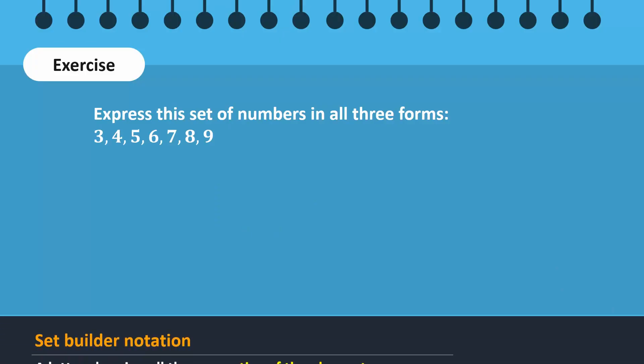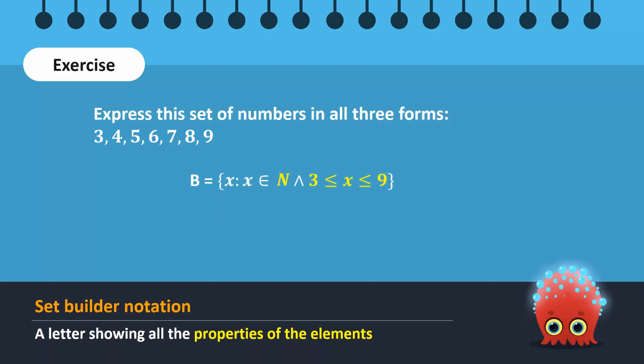The set builder form will be expressed as B equals x such that x belongs to the set of natural numbers and x is greater than or equal to 3 and less than or equal to 9. It can also be expressed as B equals x such that x belongs to the set of natural numbers between 2 and 10.